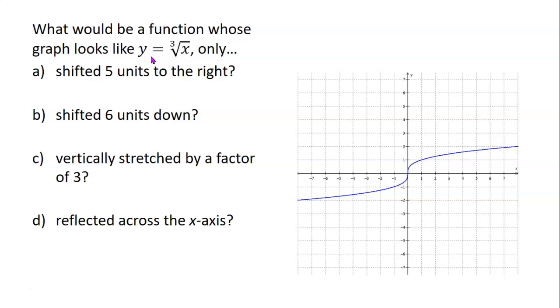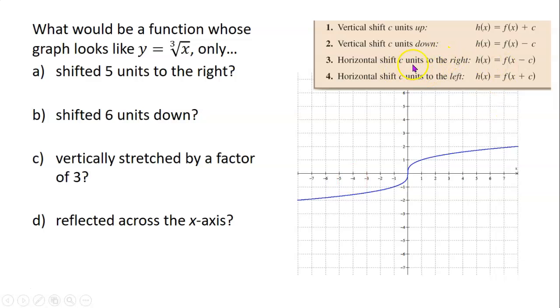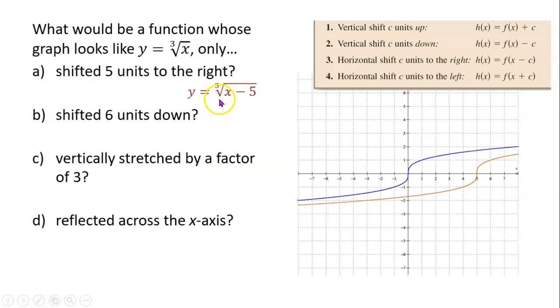What would be a function whose graph looks like y equals the cube root of x, which is what we're looking at here, only shifted five units to the right? So what's a formula or an equation whose graph looks like this, only everything's been shifted right five spaces? Remember if we want everything to be shifted to the right a certain number of spaces, we have to take the formula for the function and replace x with x minus that number. So the answer to question a would be y equals the cube root of x minus 5. Notice that minus 5 is included as what's under the radical sign.